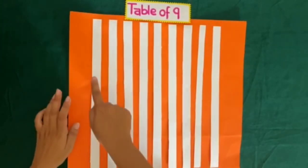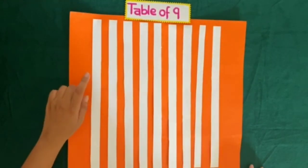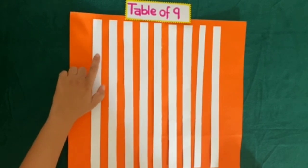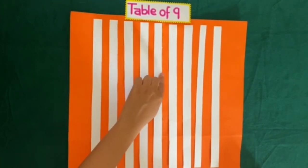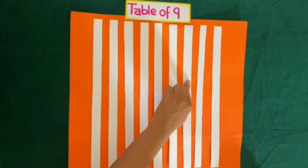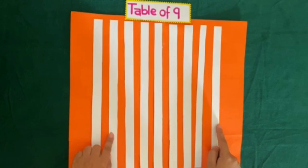Now here we have some vertical strips. Let us count how many vertical strips are there. 1, 2, 3, 4, 5, 6, 7, 8, 9. So we have 9 vertical strips.